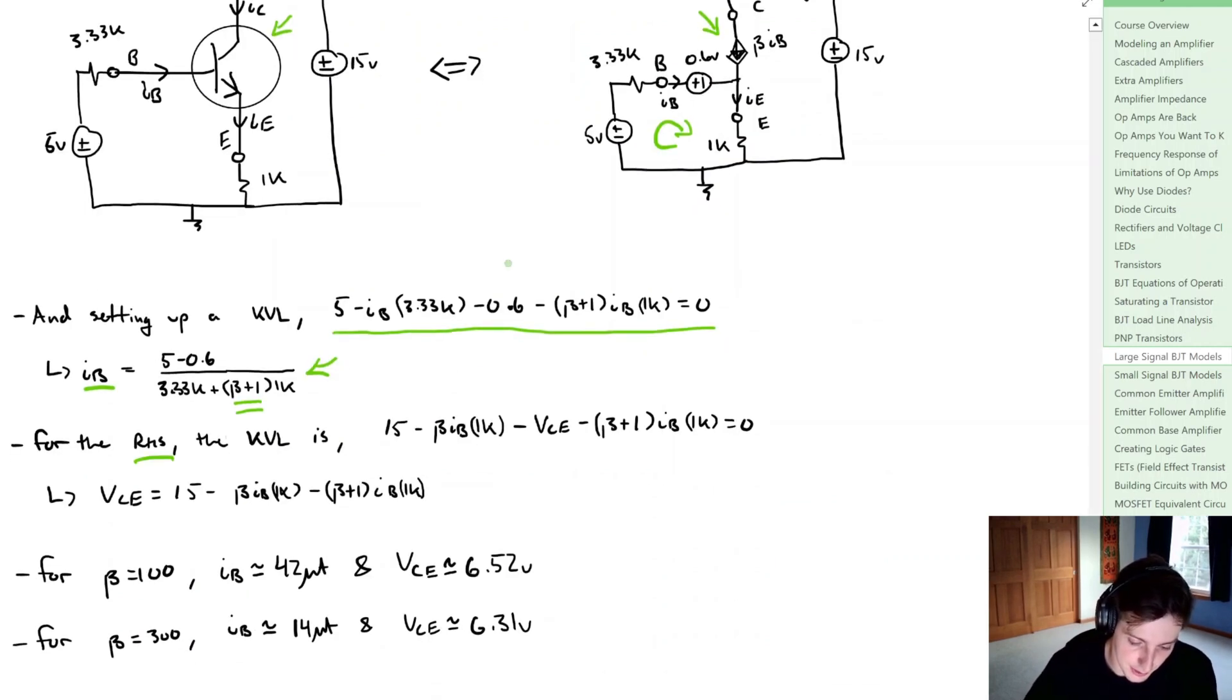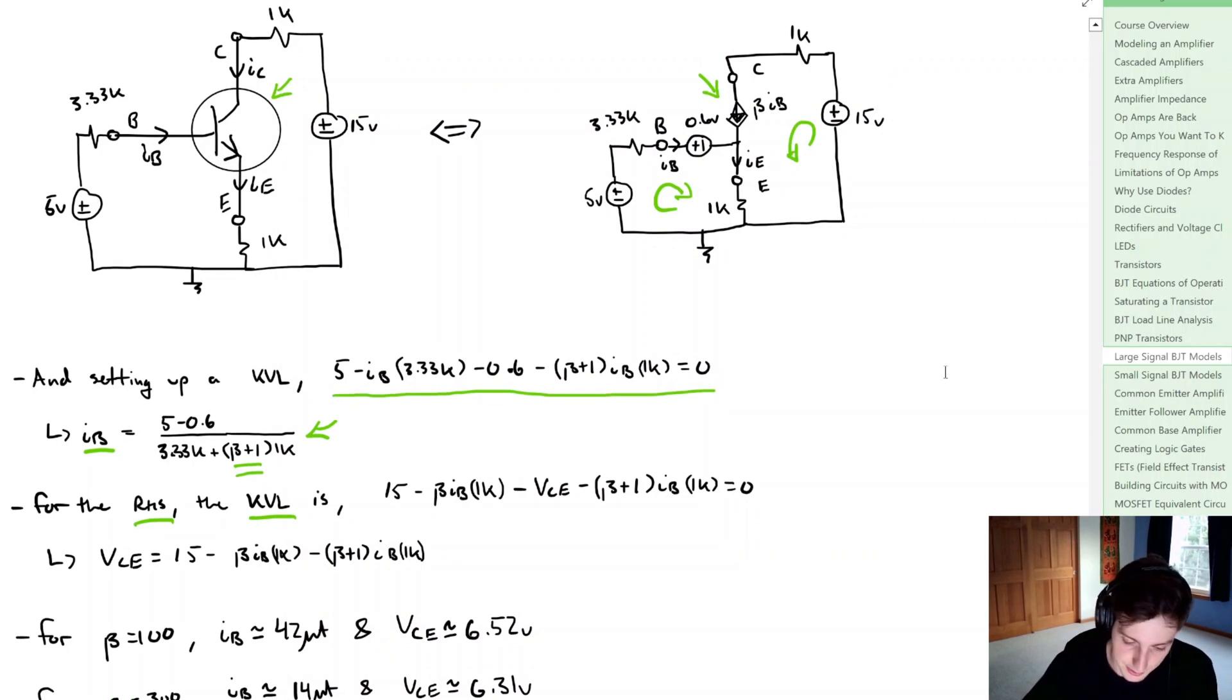On the right hand side we're going to do another KVL simply around, you could say, the collector emitter loop. So let's scroll back up.